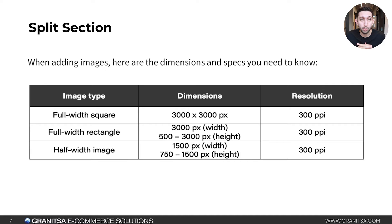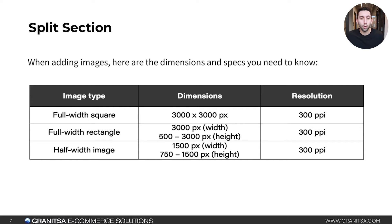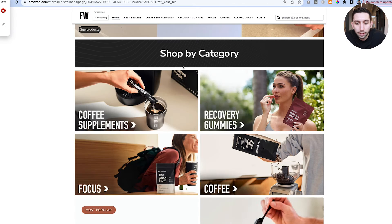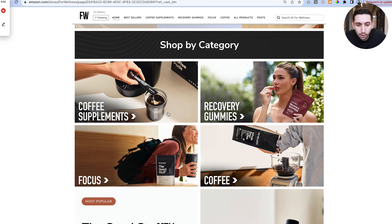When adding images to your brand store, there are a couple of specs to know. A full width square should be 3,000 pixels wide by 3,000 pixels tall at 300 PPI resolution. A full width rectangle should also be 3,000 pixels wide, with variable height from 500 to 3,000 pixels tall. A half width rectangle from the variable section layout is 2,050 pixels wide by 1,000 pixels tall, which you can see in these category images.